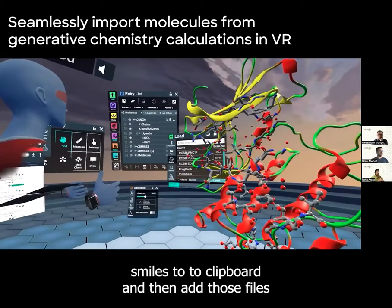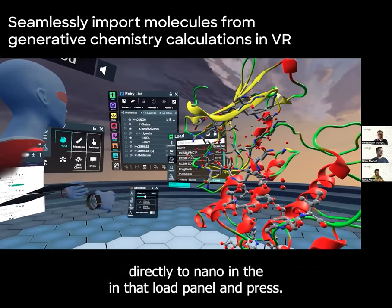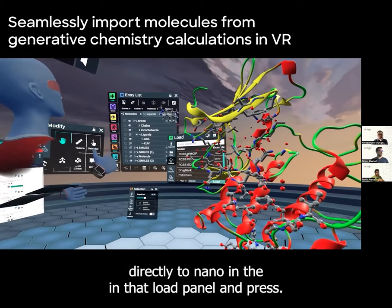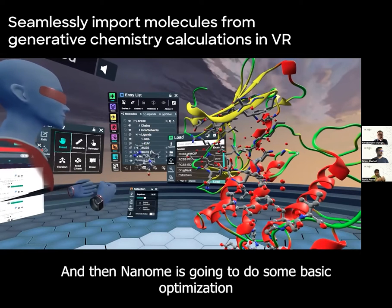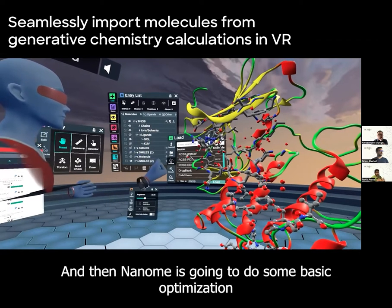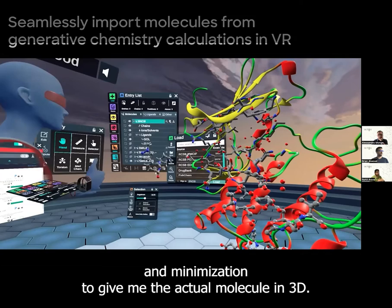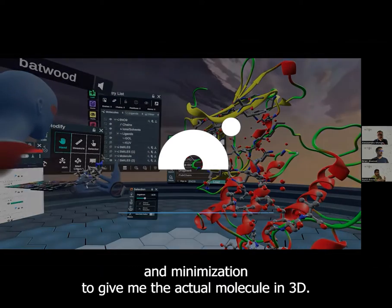and then add those SMILES directly to Nanome in that load panel and press okay. And then Nanome will do some basic optimization and minimization to give me the actual molecule in 3D.